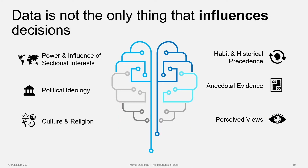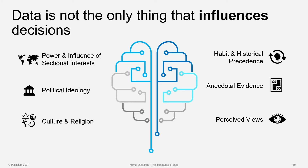Of course, data is not the only thing that influences decisions — we shouldn't be too naive. Stakeholder interest groups can influence decisions in public arenas. Political ideology on the right or left can make a big influence, particularly on public policy decisions. Culture and religion obviously frame decisions at the family, individual, and public levels. Historical precedents — how things have been done in the past — can sometimes make it difficult to change the direction of decisions. Intuition and anecdotal evidence can also override more complete data. And perceived views or understanding of how things work can influence decisions. So we shouldn't assume data is the only influence, but I do think data should be taken into consideration.